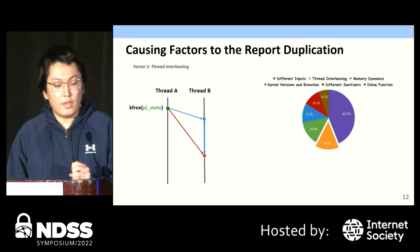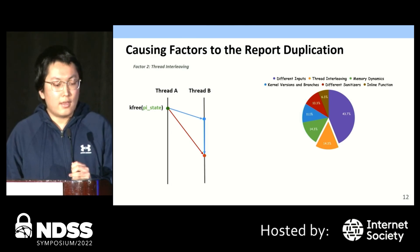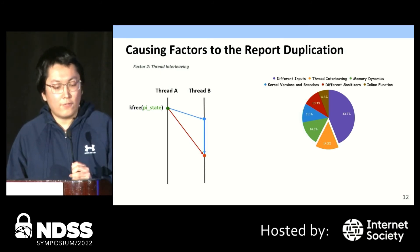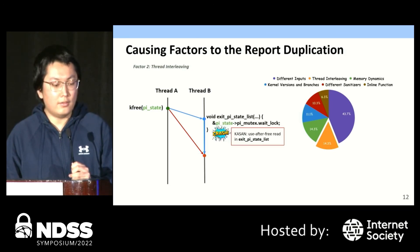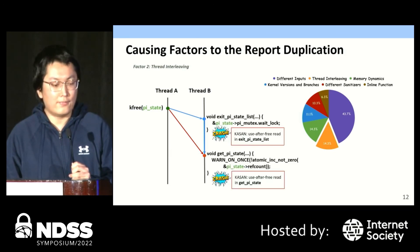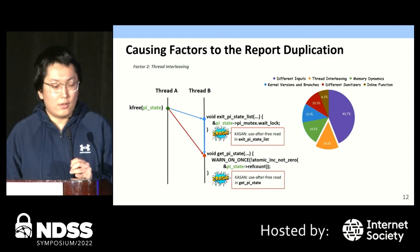The second factor is thread interleaving. In the example on the slide, we have two threads. After freeing the PSData object in thread A, the kernel will schedule thread B for execution. Depending on what function is going to be executed, use-after-free happens in different functions — either in this function or in that function. This factor accounts for around 14% of all situations.